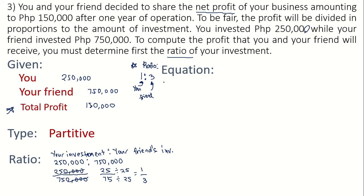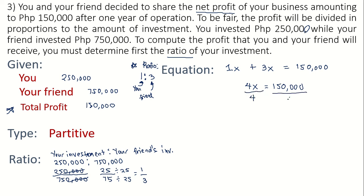Since the ratio is 1 is to 3, the equation is 1X plus 3X equals 150,000. Simplifying: 4X equals 150,000. Dividing both sides by 4, X equals 37,500.